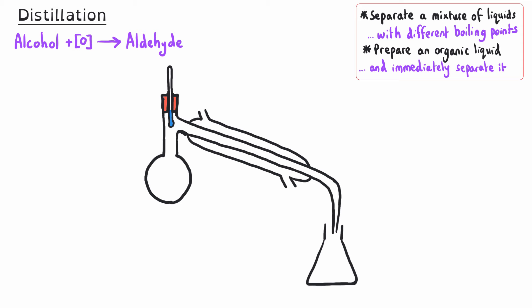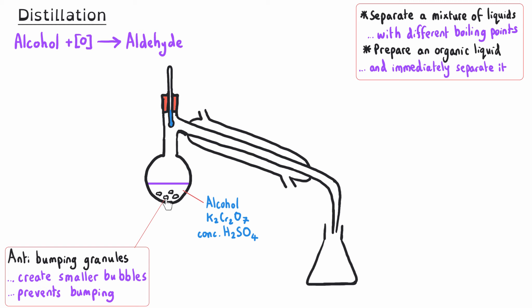You need to understand what happens in each part of the apparatus and be able to draw it yourself. On the left-hand side we've got a round-bottomed flask containing our reaction mixture. For the oxidation of an alcohol to an aldehyde or ketone, the reaction mixture would contain the alcohol, the oxidizing agent potassium dichromate, and concentrated sulfuric acid as a catalyst. We also need anti-bumping granules — tiny grains made from silicon or calcium compounds — to create smaller bubbles and prevent the mixture from jumping over into the condenser, which is what we refer to as bumping.